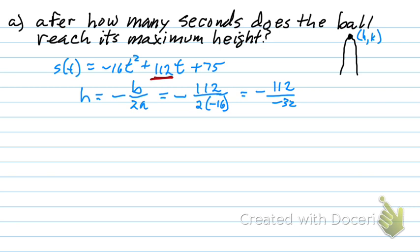Equals negative 112 over 2 times negative 16. So I get that. And my negative signs are going to cancel. So what's 112 divided by 32? I'm getting 3.5.